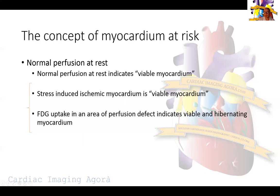FDG uptake in an area of perfusion defect indicates viable and thus hibernating myocardium. These last two statements are important to keep in mind to construct what we call myocardium at risk. So instead of reporting things as 10% ischemia, 10% scar, 20% hibernation, you have to give a report that defines the totality of the myocardium at risk rather than these individual fragmented statements.